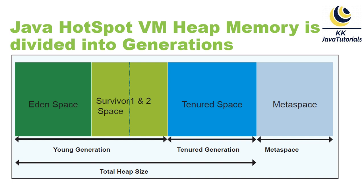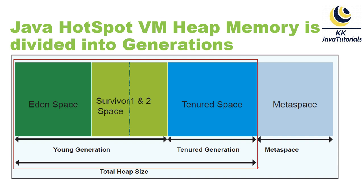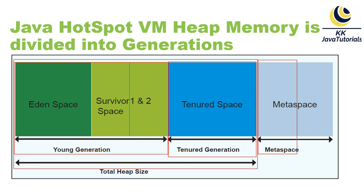This is the Java HotSpot Virtual Machine heap memory structure, which is divided into different generations. The total heap size is divided into two categories: young generation and tenured generation, also called old generation. The non-heap memory area is called metaspace, which is available from Java 8 onwards.